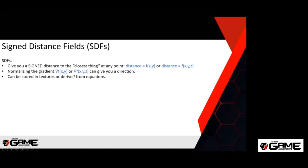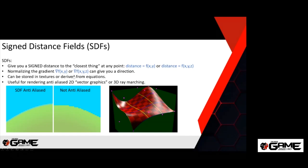You can store signed distance fields in textures, or derive them from equations at runtime, which is what I'm doing in these demos. Common uses include 2D vector-like rendering where you can zoom in as much as you want and always see smooth detail without pixelation, anti-aliasing by making the last few pixels to the surface semi-transparent, and ray marching — here I show ray marching of a bicubic Bezier patch using a signed distance field.